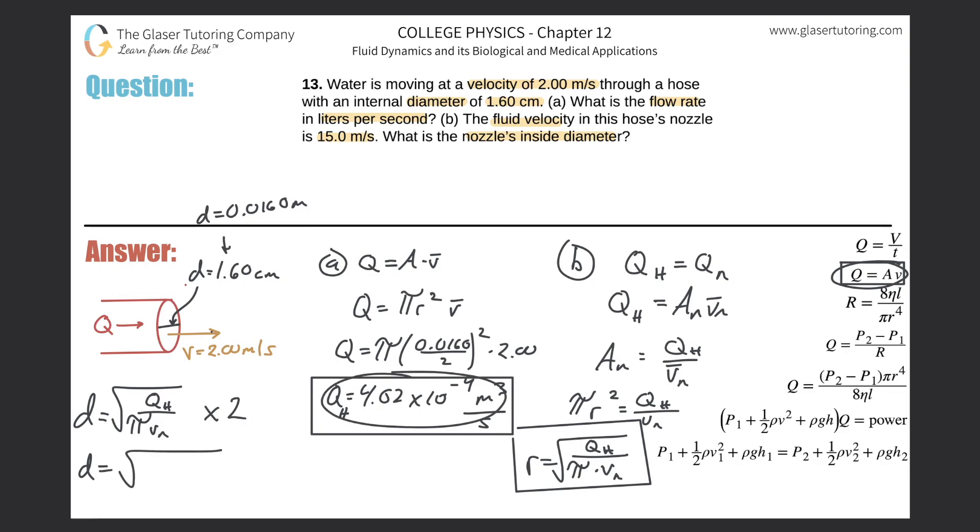So square root of this thing, 4.02 times 10 to the minus fourth, divided by pi, times that velocity now through the nozzle, which was 15 meters per second, great, all the units are lining up, and then take that and multiply it by two. And what do we get? So square root of that answer, 4.02, I'm using the exact number, times 10 to the minus four, then take that and divide it now by parentheses pi times 15, close those parentheses, find that answer, and then take that and multiply it by two. And here we go, the diameter now is going to be, let me do it in scientific.